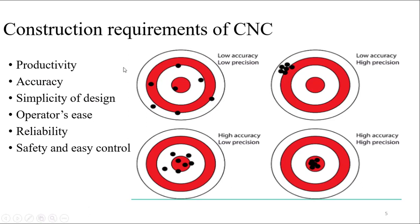I'll discuss two things: accuracy and precision. In the first circle, the dots are not close to the center — this is low accuracy and low precision. In the second one, the dots are not in the center but they are very close to each other — so it is low accuracy but high precision. In the third case, the dots are near to the center but not very close — that is high accuracy but low precision. In the last one, all the dots are in the exact center and very near to each other — that is high accuracy and high precision. So you want from a CNC that it should be high in both accuracy and precision.